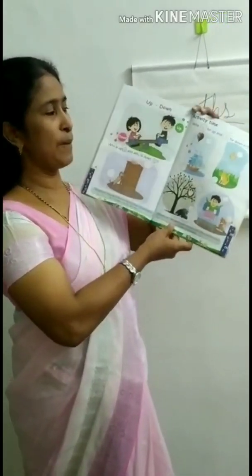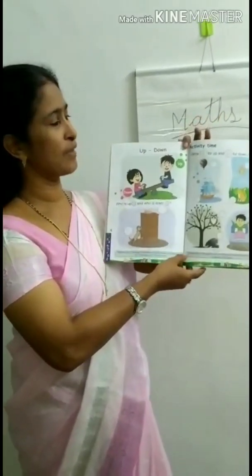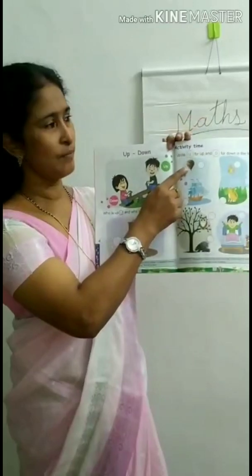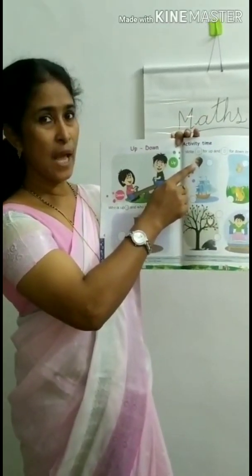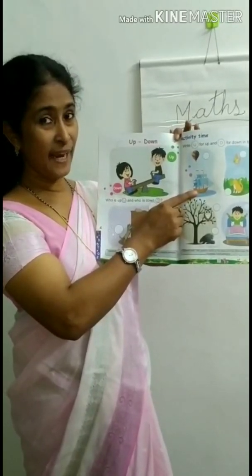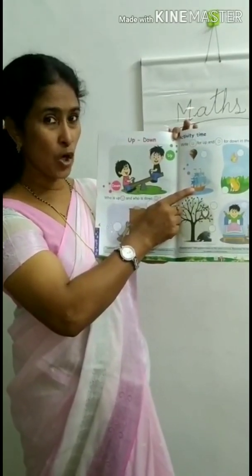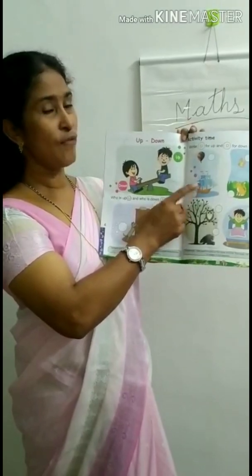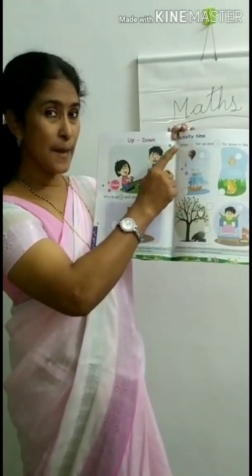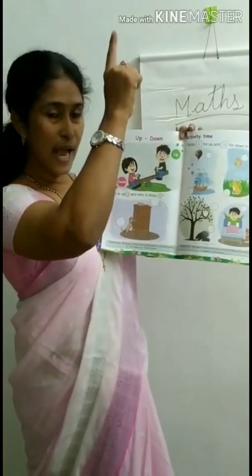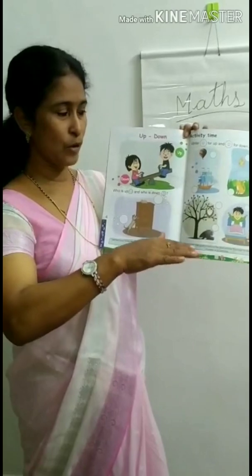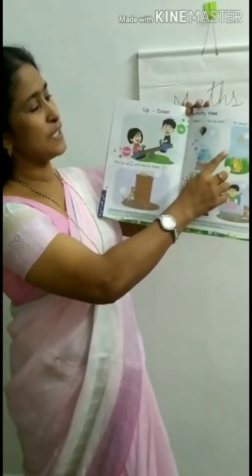Then page number 53. What is this? This is a balloon. What is this? This is a boat. Where is balloon? Balloon is up. Balloon is up. Boat is down. Boat is down.